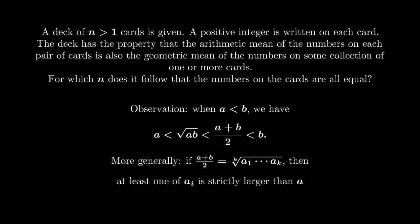More precisely, if the average of a and b is the geometric mean of some numbers, then necessarily one of these numbers is strictly larger than a. This simple fact is indeed the key of the proof. Let's see how we proceed.